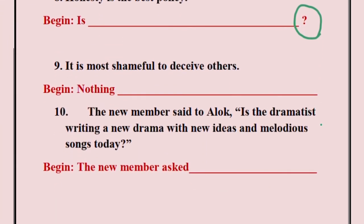Number nine: It is most shameful to deceive others. This is also another form of degree of comparison. It is already given in the superlative form, which means it is very shameful to deceive others — there is nothing as shameful as that. So if you are told to start with the word 'nothing': Nothing is as shameful as deceiving others.